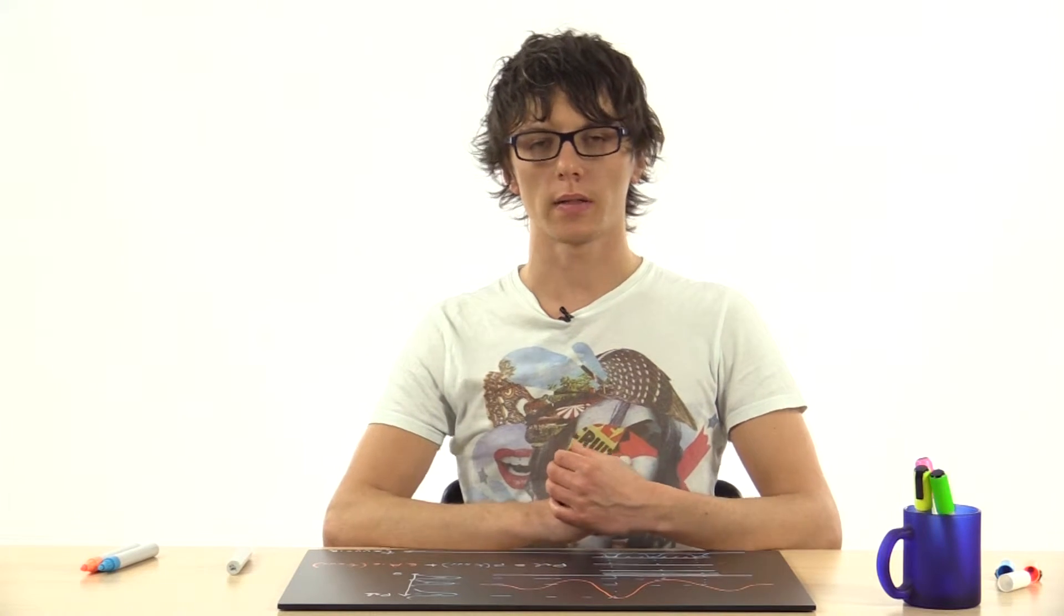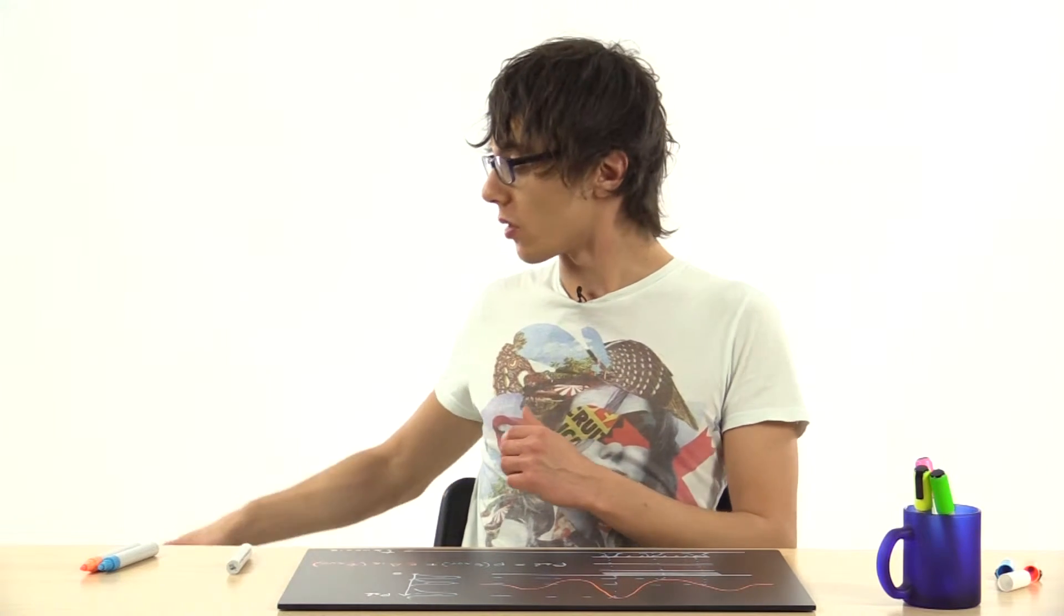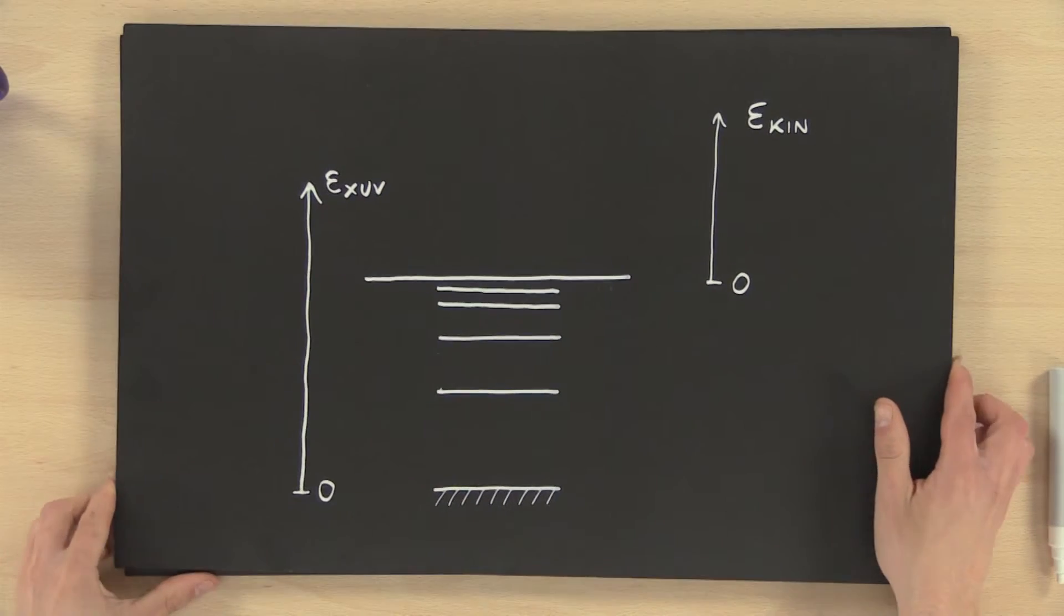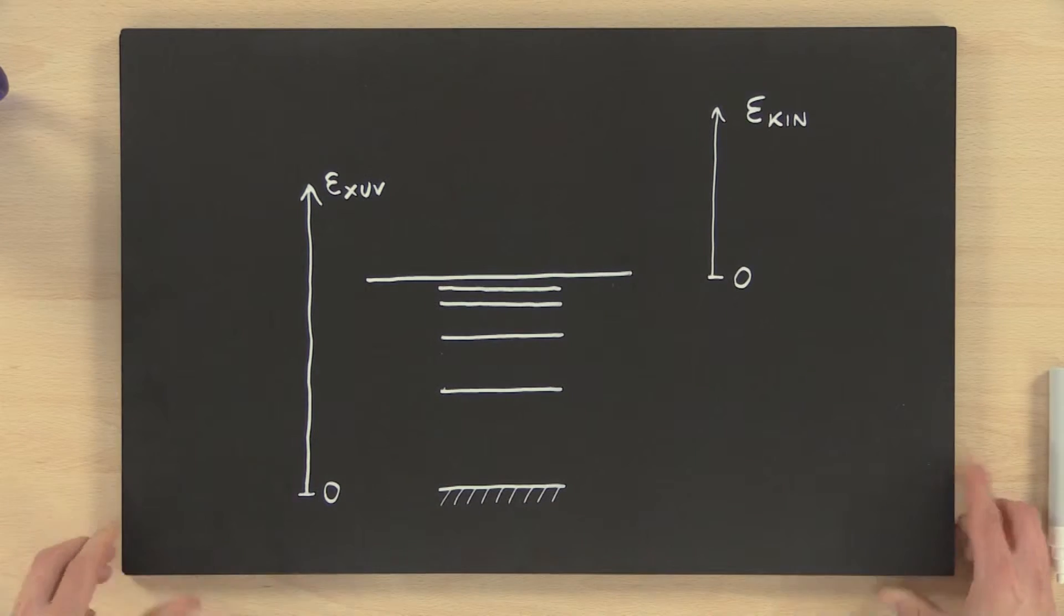But the main feature of a reaction microscope is that it measures all of the three components of the momentum vector of all the detected particles in coincidence. This can be useful in many different situations.